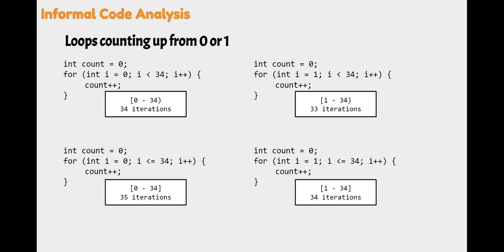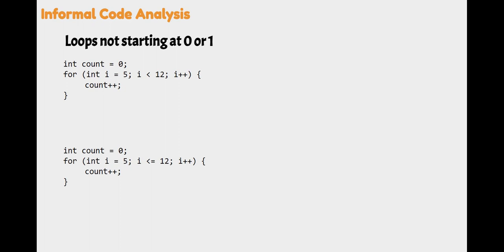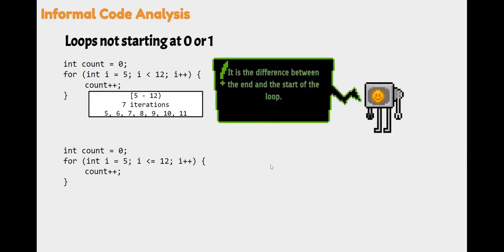When our loop starts from zero or one, it's pretty easy to calculate how many iterations we do, especially when we count up by one. Now let's look at some loops not starting at zero or one. We are initializing I to five, looping while less than 12, going up by one. That's five through 12 not inclusive — seven iterations: 5, 6, 7, 8, 9, 10, and 11. When the first number is included and the last number is not included, it's just the difference between the end and the start. We take 12, subtract five, and we get our seven iterations.